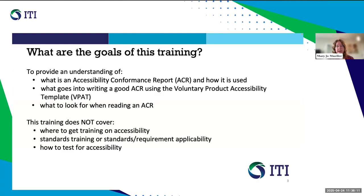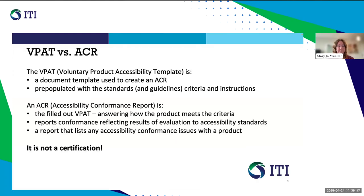We also won't be providing any compliance information regarding what you need to do to meet regulations. As its name indicates, the Voluntary Product Accessibility Template is a template, and it's used to create accessibility conformance reports. It's pre-filled with some instructions and the accessibility standards and guidelines criteria. An Accessibility Conformance Report, or ACR, is a VPAT that's been fully completed — it's the result of filling out the template with the results of your product evaluation against the accessibility standards. It is a report that lists any accessibility conformance issues with the product.